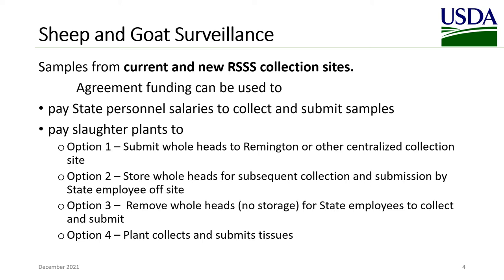Templates exist for the sampling agreements and for statements of work for each of the four options listed. See links in your cooperative agreement guide. Guidelines for allowable costs can also be found in the comments of the SOW templates. Note that templates are written for agreements with USDA and will need to be modified for co-operator use. It is preferred that USDA enter into agreements with the slaughter plants, but note that with options two and three, there can still be state involvement in sample collection.